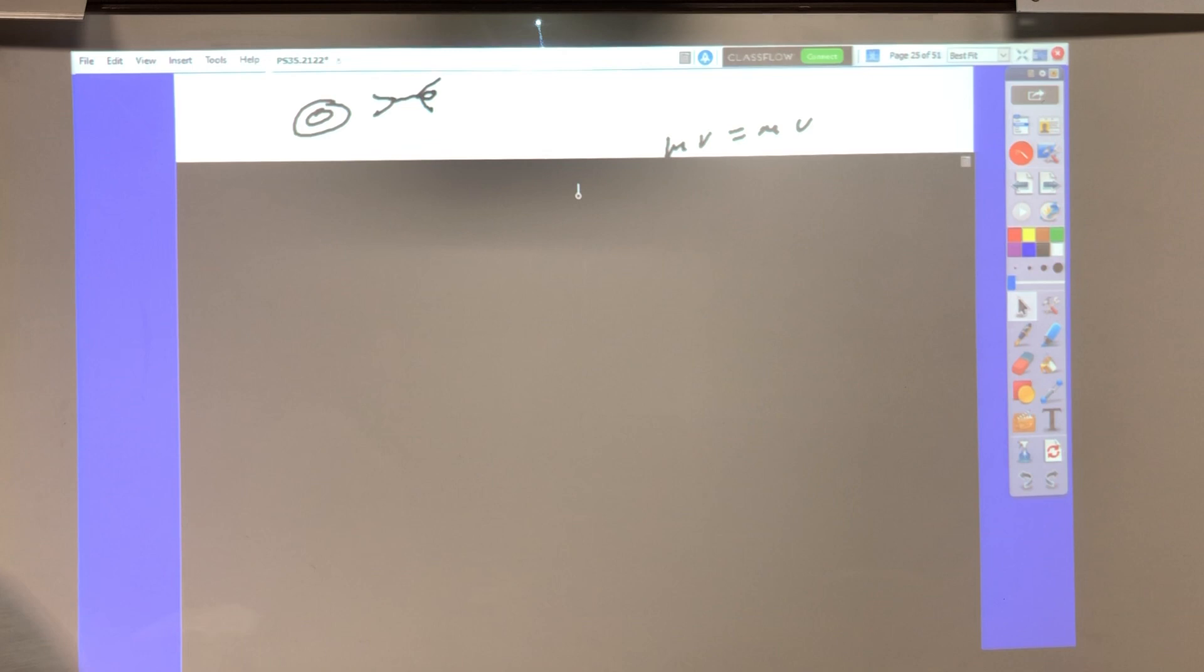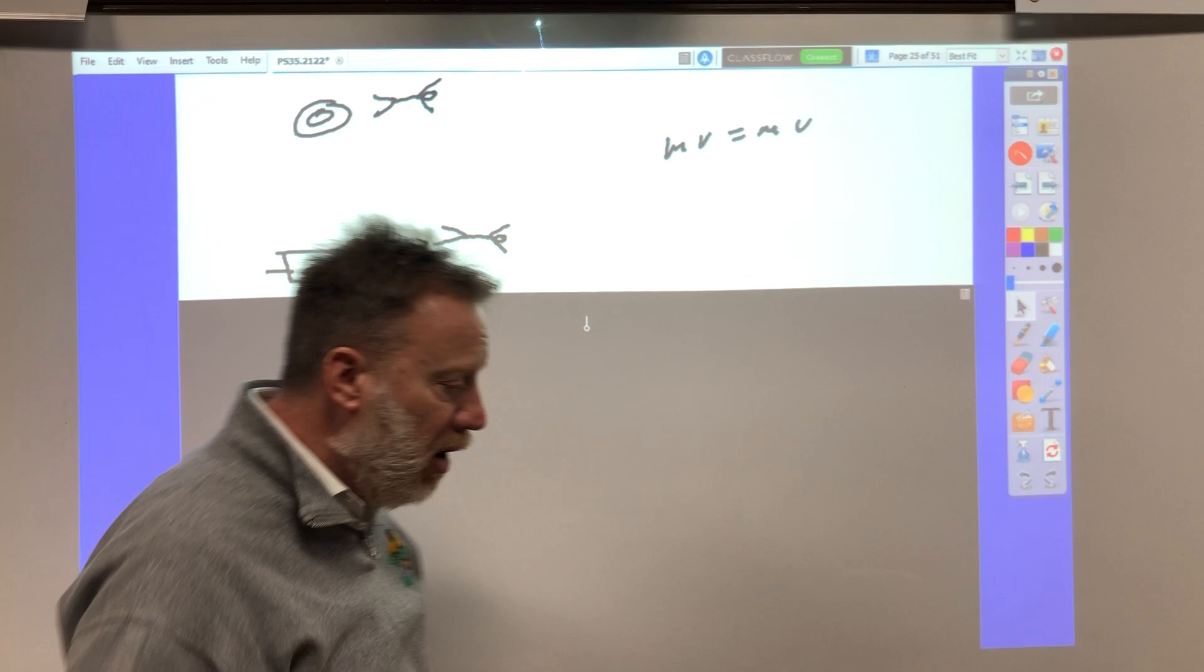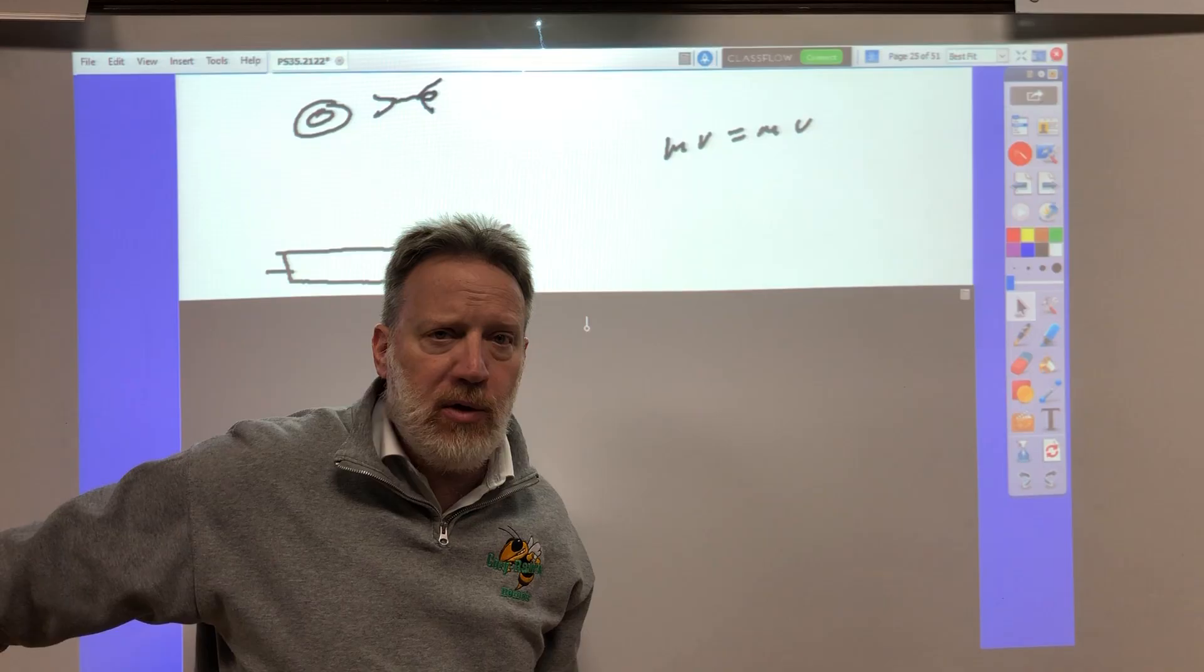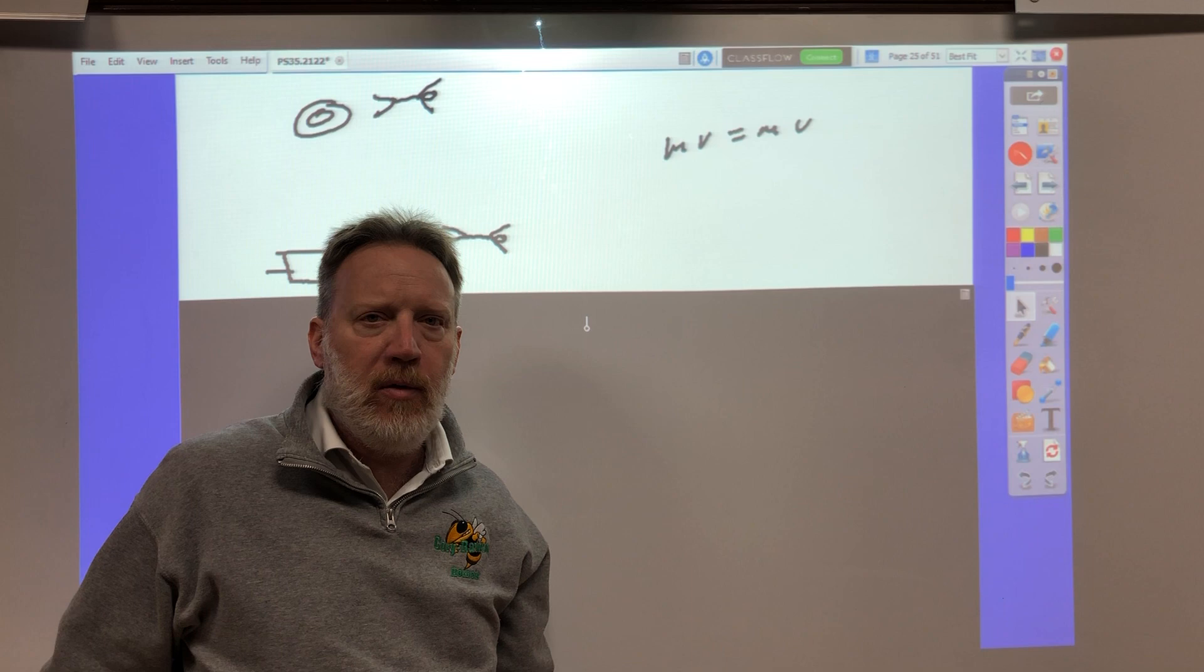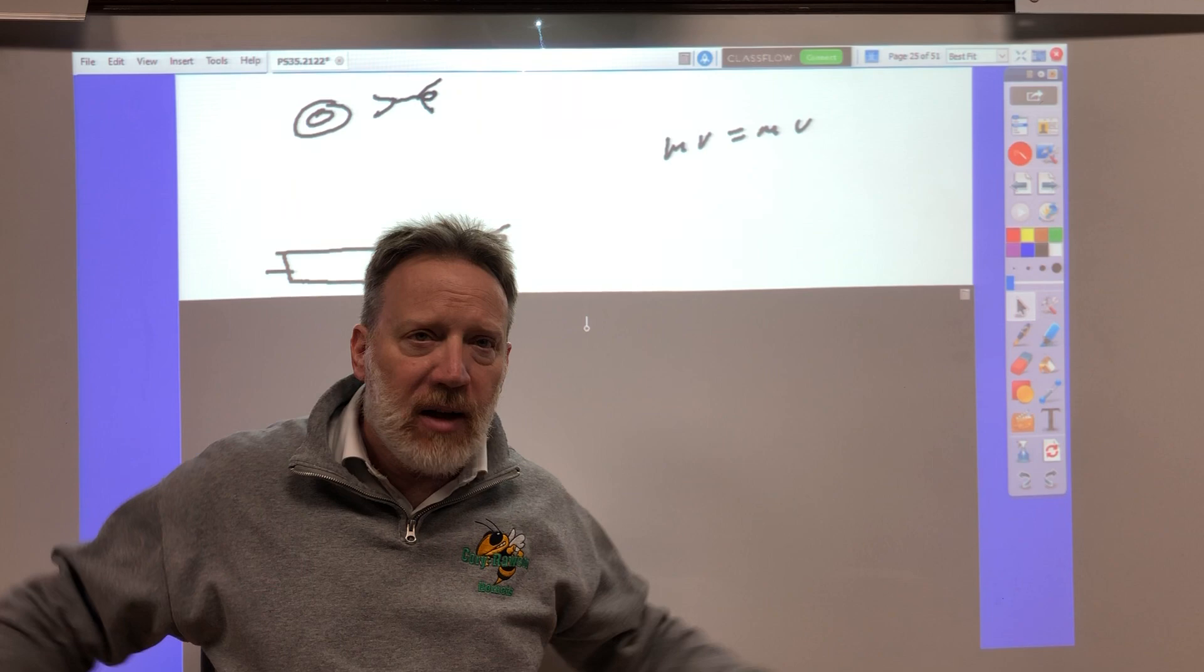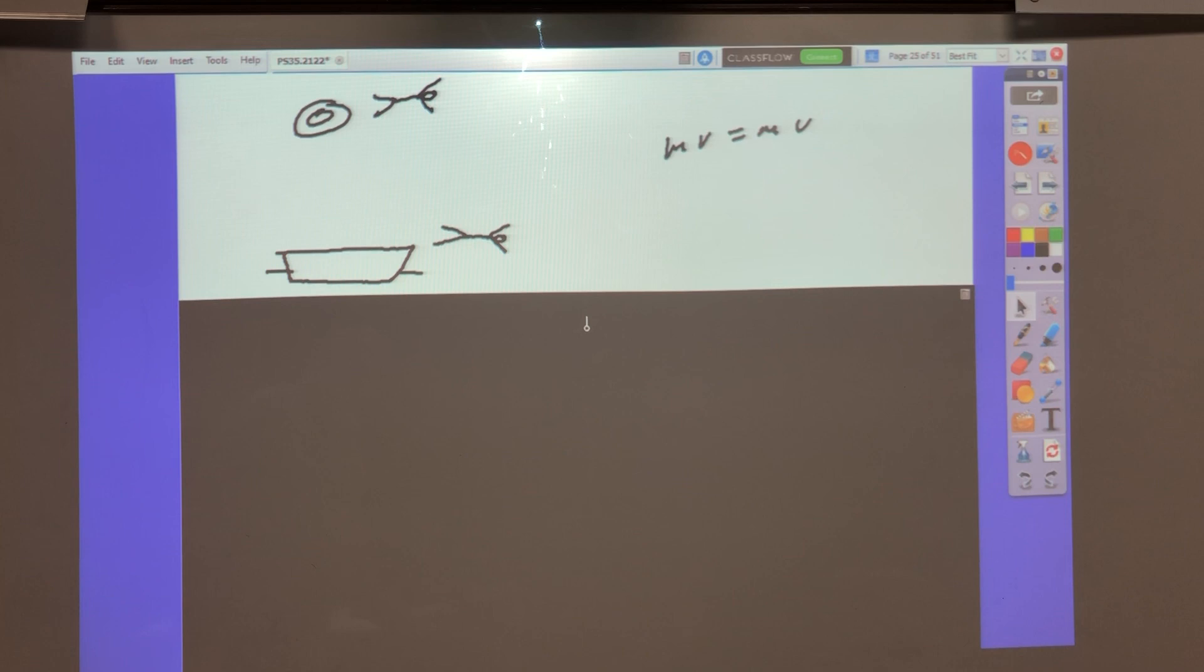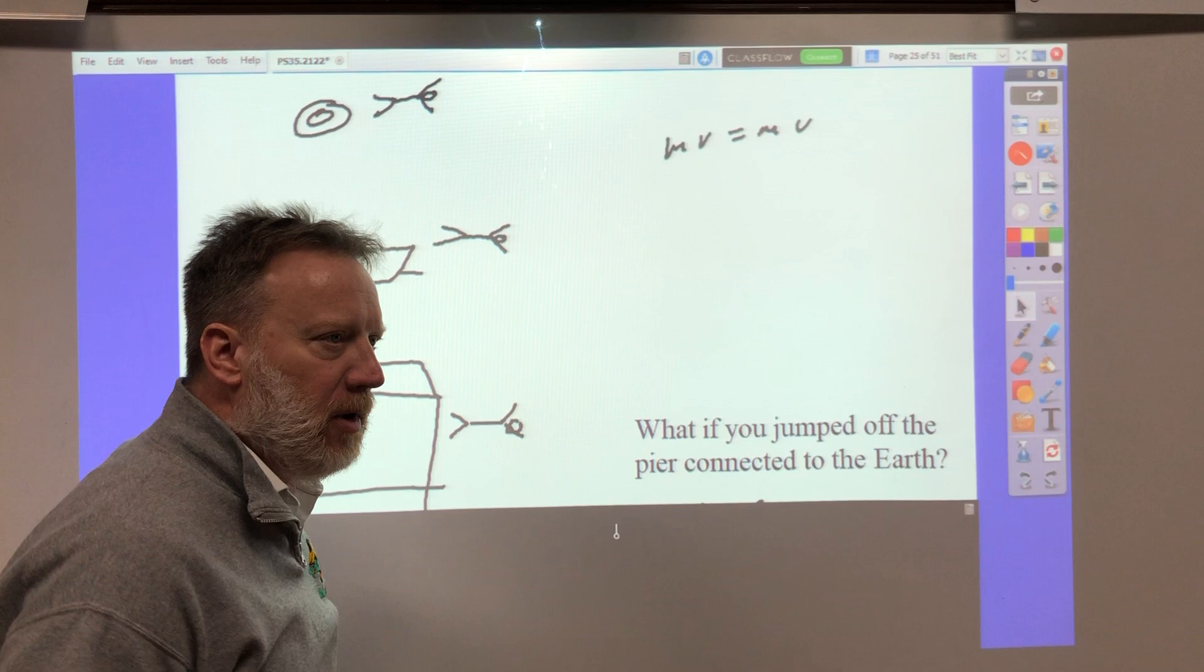Now, let's say you jump off of a canoe or a rowboat. What happens then? Well, you go forward more this time, and the boat goes shooting back. So you both move. If you're about the same mass, you're going to move about the same speed and go about the same distance. Well, except the boat's going to continue once you're in the water, because it's floating.